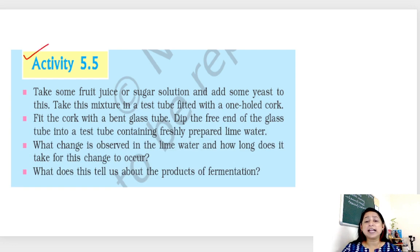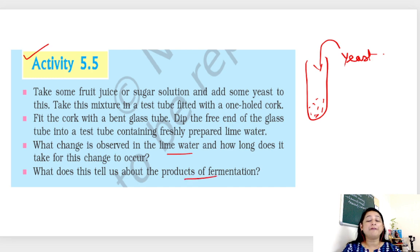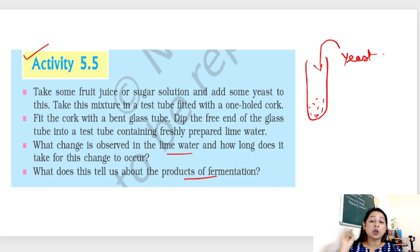The second activity is 5.5 from your NCERT. It states: take some fruit juice or sugar solution, add yeast to it, and fit a cork. We take a test tube with juice and add yeast to it. What change do you observe in the lime water and how long does it take? How does this tell us about the product of fermentation? Fermentation takes place when yeast is added to fruit juice, since fruit juice provides a sweet environment for yeast to easily ferment.